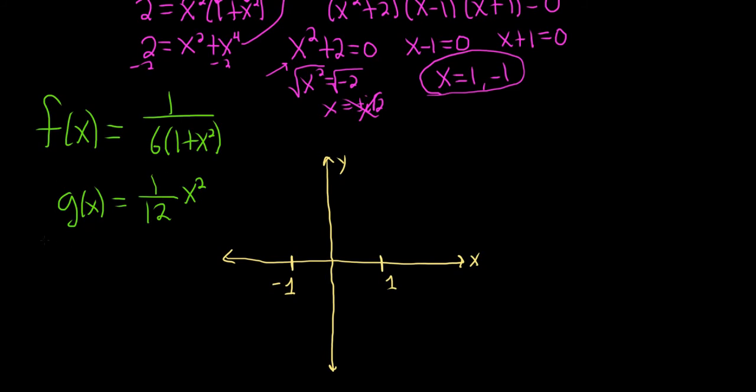And it might be good to know at what x value this happens. So if we plug in 1 or negative 1 into g, we're just going to get 1 12th. So we should make sure that we get the same thing when we plug it into f. So if you plug in 1 into f, you get 1 over 6. And then 1 plus 1. Oh, yep, sure enough. 6 times 2 is 12, so 1 12th.